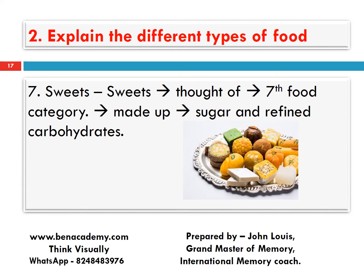This is a picture of sweets. Try to recollect one more time — close your eyes. Sweets can be thought of as what? A seventh food category. It is made up of what? Sugar and refined carbohydrates.